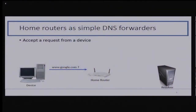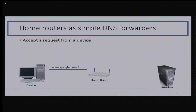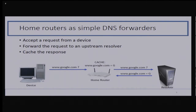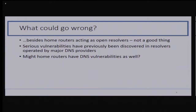If these things really are home routers, then we already know something about their DNS behavior — they're simple forwarders. They accept a request from a device within the home network, forward the request to an upstream resolver like an ISP's or Google Public DNS, cache the response, and then return that response to the device within the home network. Very simple.